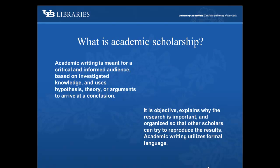Academic writing is meant for a critical and informed audience. It's based on investigated knowledge and uses hypothesis, theory, or arguments to arrive at a conclusion. It is objective, explains why the research is important, and organized so that other scholars can try to reproduce the results. Academic writing utilizes formal language.